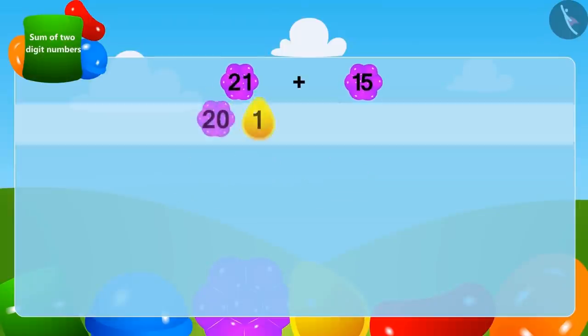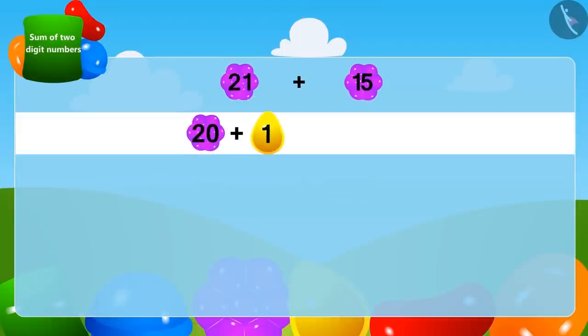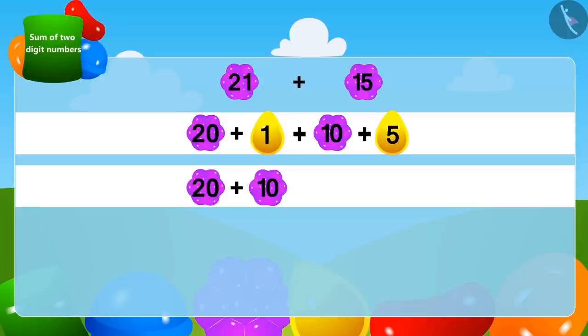We can write 21 as 20 plus 1. In the same way, 15 can be written as 10 plus 5. Now we will write two-digit numbers together and one-digit numbers together.